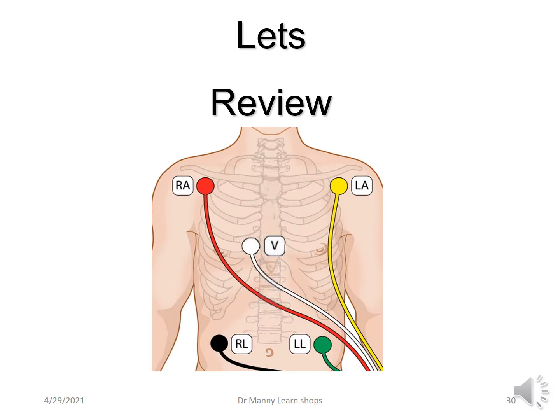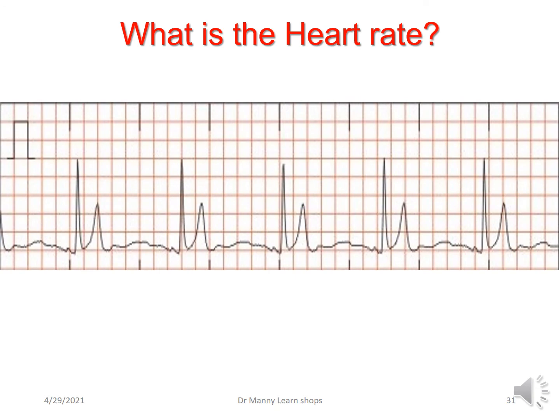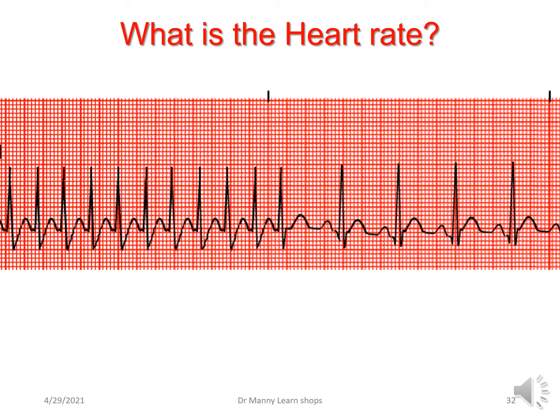Let's review — you can do some work. What's the heart rate here? The heart rate is 50 beats per minute because there are five cardiac cycles or ECG complexes in a six-second rhythm strip. What's the heart rate here? The heart rate is 150 beats per minute because there are 15 cardiac cycles — fast to begin with, then slowing down, but that doesn't matter. The rate is 150 beats per minute.